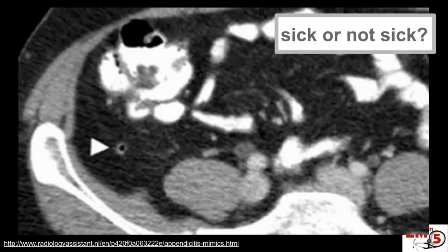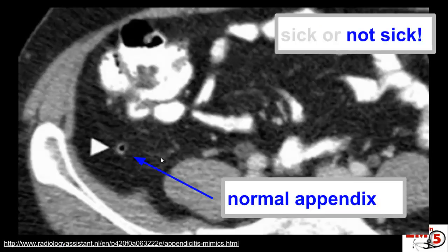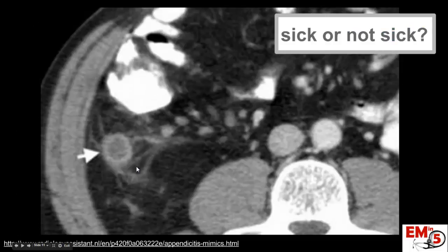What about this one? We've identified our appendix right here. This is not sick — this is a normal appendix. We see there's air inside, no fluid, it's not dilated, and there's nice dark fat around it, so there's no fat stranding. This is a normal appendix.